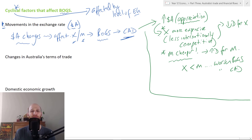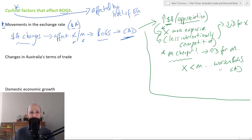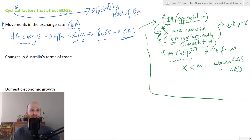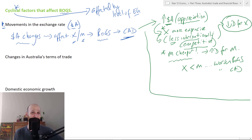If we get a stronger Australian dollar, the first thing that will happen is that exports are more expensive. It will take more foreign currency to buy Australian dollars, which makes exports more expensive. When we talk like economists, we say that Australia's exports are less internationally competitive — they're more expensive — and if something is more expensive, demand will contract, so there will be reduced demand for Australian exports.